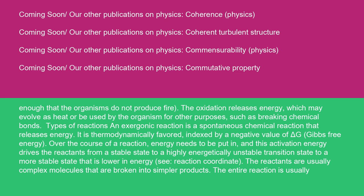Types of reactions: an exergonic reaction is a spontaneous chemical reaction that releases energy. It is thermodynamically favored, indexed by a negative value of delta G, Gibbs free energy. Over the course of a reaction, energy needs to be put in, and this activation energy drives the reactants from a stable state to a highly energetically unstable transition state to a more stable state that is lower in energy. The reactants are usually complex molecules that are broken into simpler products. The entire reaction is usually catabolic.